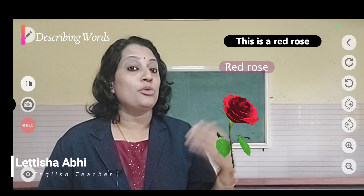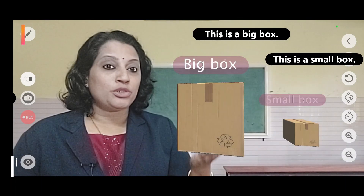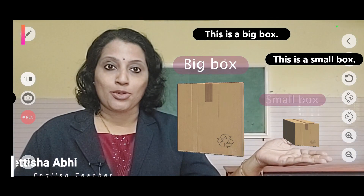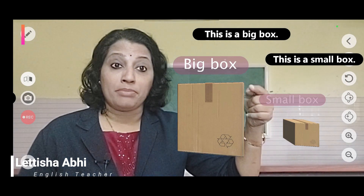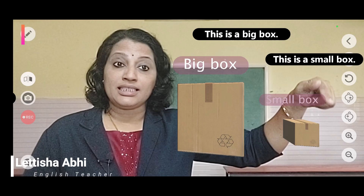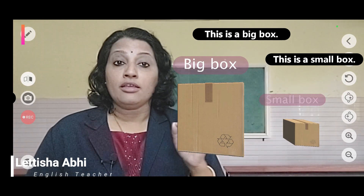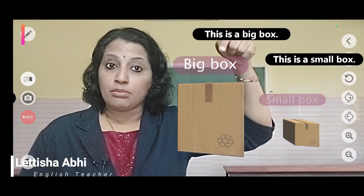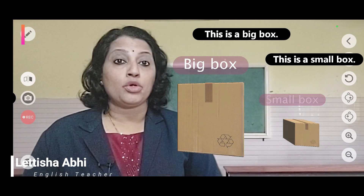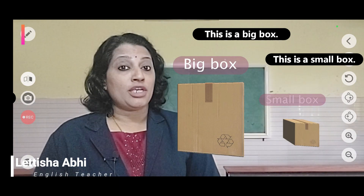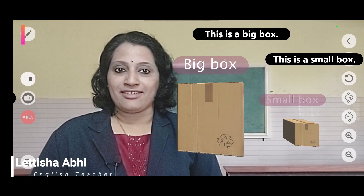Isn't it beautiful? Red is the describing word. Let us look at our next example. What do we have here? We have a big box and we have a small box. This is a big box. This is a small box. In the sentence 'this is a big box,' box is the naming word. And which word is telling us more about the naming word box? Big is giving us more information about the noun box. So, big is the describing word.